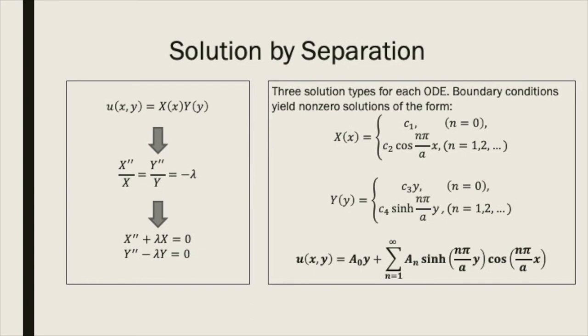The boundary conditions specify which of these solutions is viable for our problem. In this case, the Neumann conditions on x yield a constant solution, as well as an infinite family of cosine terms corresponding to each non-zero natural number. The boundary conditions on y yield one linear solution and a family of hyperbolic sine terms. We can therefore set up a general solution in terms of an infinite series, which we can make converge to our remaining non-zero boundary condition at y equals b.